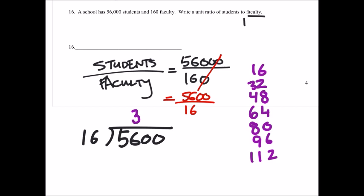So 16 will go into 56 three times, minus the 48, we get 80. Oh, that'd be very nice. 16 goes into 80 five times. And we'll subtract that and get zero remaining, so it's 350 students.